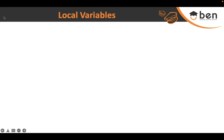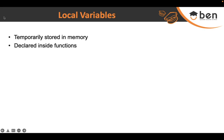Moving on to local variables: contrary to state variables, local variables are temporary variables stored in memory. Since they are declared inside functions, they are not contract-level variables. Their scope is limited to the function itself. Since all function data is stored temporarily in memory, local variables are also temporary and not persistent.